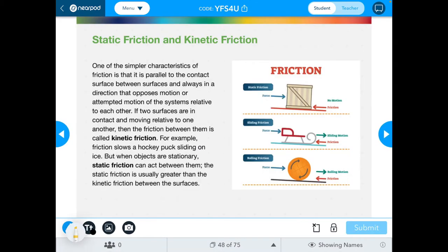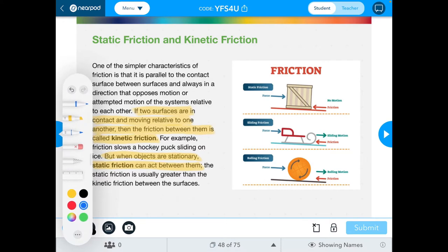Some friction is what's keeping something from moving, and some friction is what is maybe slowing down the motion, depending on which type of friction we're looking at. So those two types of friction: the one that slows down the motion but still allows for motion to occur is called kinetic friction. If two surfaces are in contact and moving relative to one another, then the friction between them is kinetic friction. But if two objects are stationary, static friction can act between them. Static friction is usually greater than kinetic friction between the surfaces.